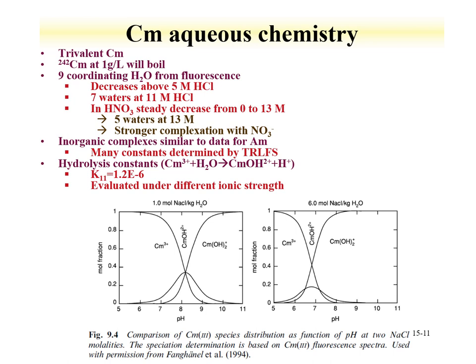The aqueous chemistry of americium is dominated by the trivalent state. It has nine-fold coordination with water, a very high degree of coordination. Inorganic complexes of curium are very similar to the americium species, with many constants determined by time-resolved laser fluorescence spectroscopy. Curium, like uranium, can undergo fluorescence. The lifetime of americium fluorescence is generally measured in nanoseconds. Americium speciation as a function of sodium chloride concentration shows the americium species is trivalent — it's a free metal ion generally up to pH 6, and above pH 9 we get the dihydroxide.